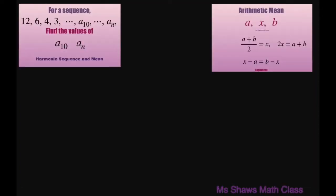So basically what we're going to do is look at a harmonic sequence by taking the reciprocal of each term that we have in our sequence. So this would be 1 divided by 12, 1 divided by 6, 1 divided by 4, 1 divided by 3,